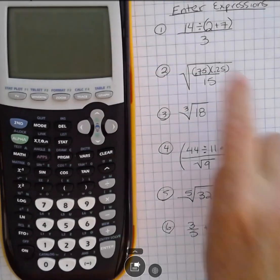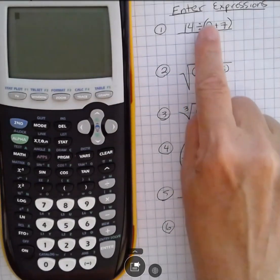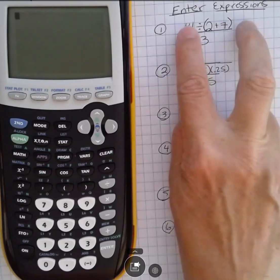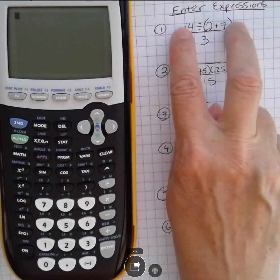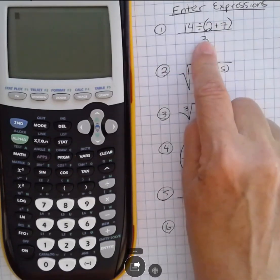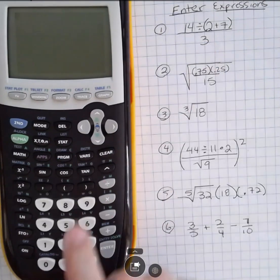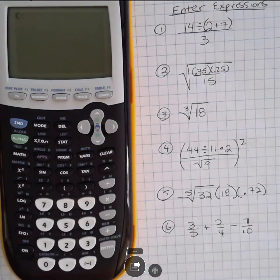When you're entering expressions, you want to make sure that if you have something where you have a numerator or denominator, you tell the calculator the entire numerator is being divided by the denominator, and you do that by using your parentheses. Parentheses above the 8 and 9 - you use those all the time.